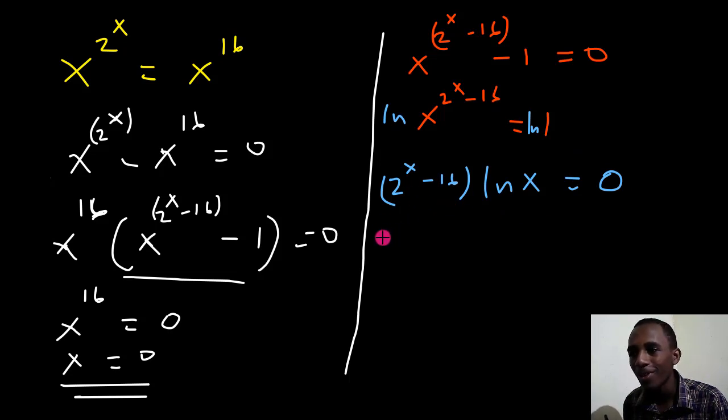So we have two more equations here. 2 to the power x minus 16 equals 0.